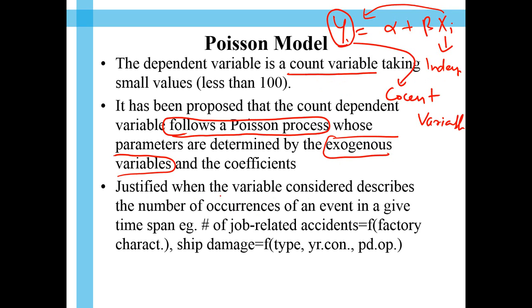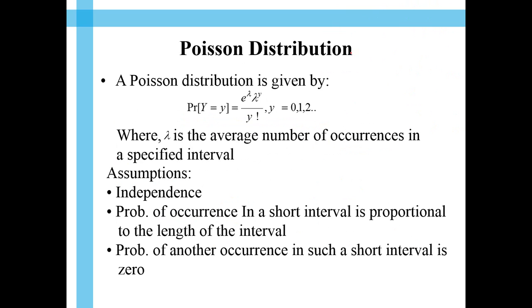So, this model is justified when the variable considered describes the number of occurrences. That's what I was telling to you. Number of occurrences is something that we are interested in while building a Poisson regression model.